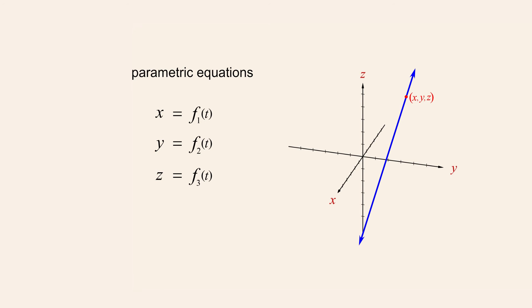In this example, we have chosen the letter t to represent this parameter. For any given value of t, each of the three parametric equations determines a corresponding value for one of the three coordinates. For example, the values of x, y, and z could be equal to t, t plus 1, and 3t minus 3. So each value of t corresponds to an ordered triple which describes the position of one point on the line.